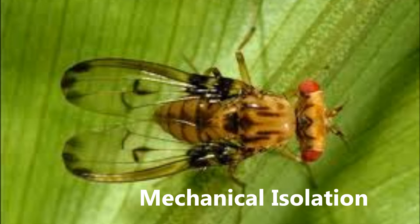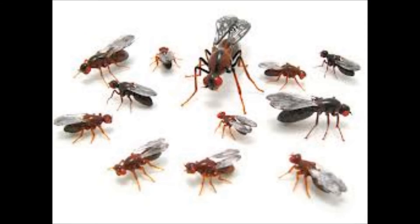We now have mechanical isolation. Mechanical differences prevent successful mating. Even if there are no temporal or behavioral cues to keep individuals of two species from hybridizing, it may simply be physically impossible for mating to take place. Mechanical isolation occurs when two species have significant anatomical differences that prevent them from mating. For example, many species of the fly genus Drosophila are virtually indistinguishable except for differences in the male and female genitalia. Similar to the working of a lock and key, males cannot copulate successfully with females from the wrong species.